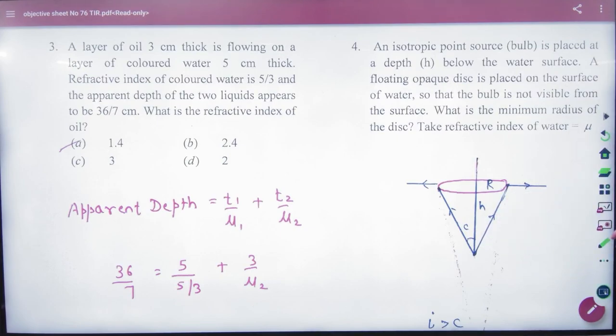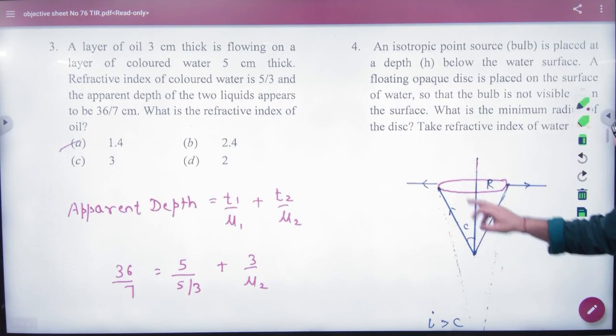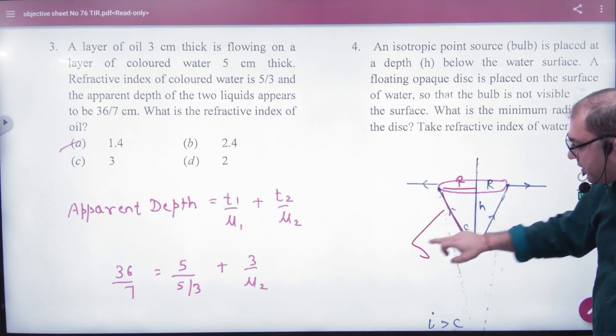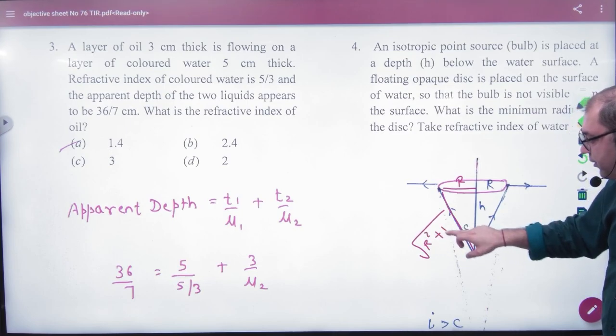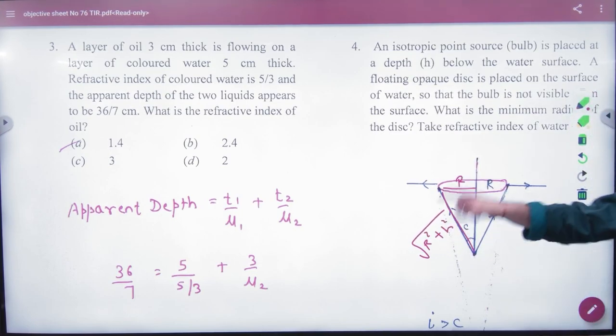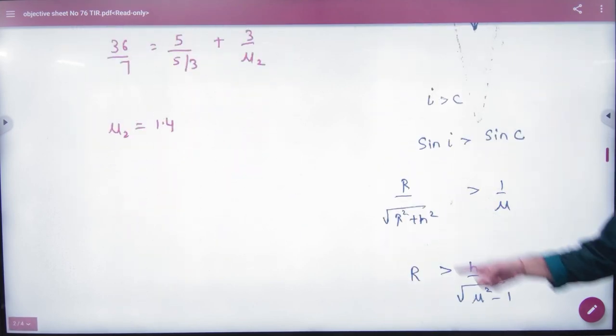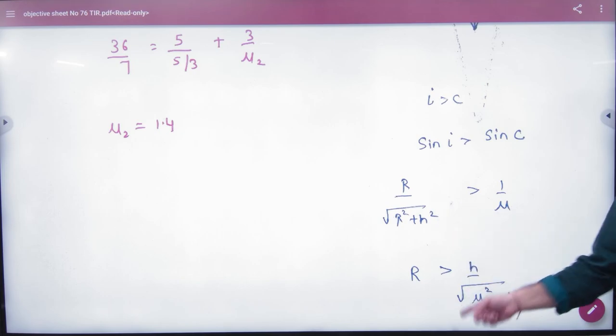Sin C will be equal to R divided by this value, and this value is under root of R square plus H square. So sin C is equal to R upon under root of R square plus H square. If you want to put this value here, you need to have R condition. You have to square it, solve it. Next question number 5-6.